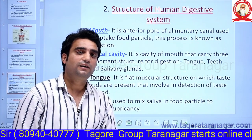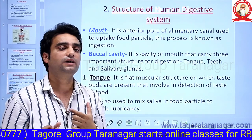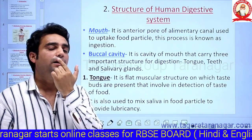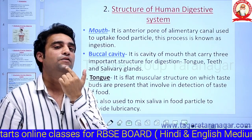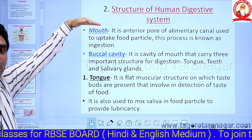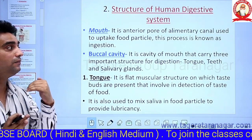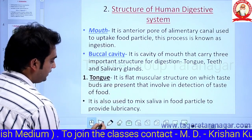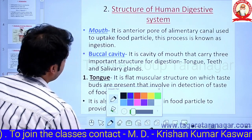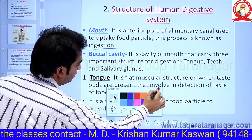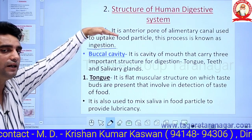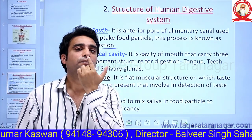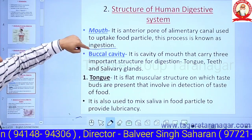Now we will study all the parts of the alimentary canal one by one. The first part is the mouth. The mouth is the anterior pore of the alimentary canal, surrounded by the lips. The mouth is used to take up food particles from the environment. The complete process by which the mouth takes up food particles is known as ingestion — this is a very important process.